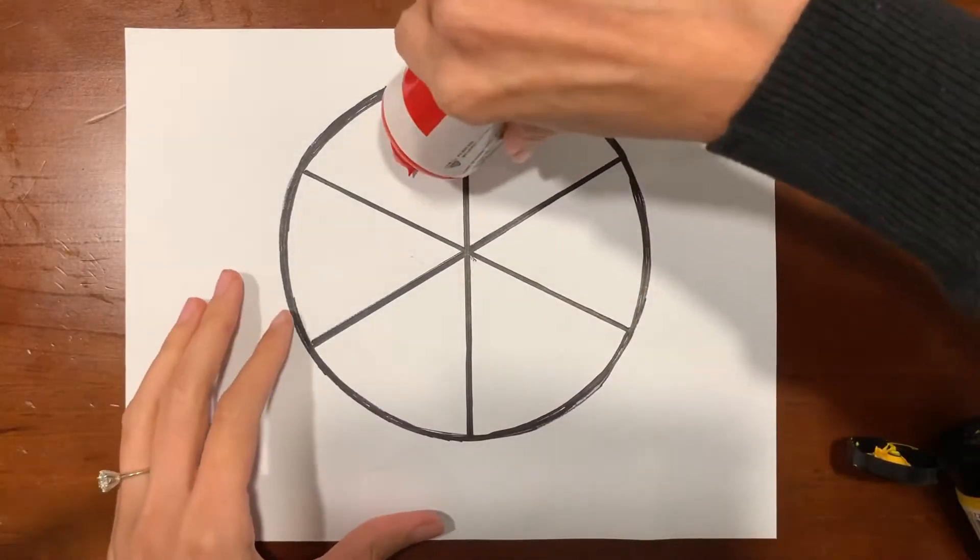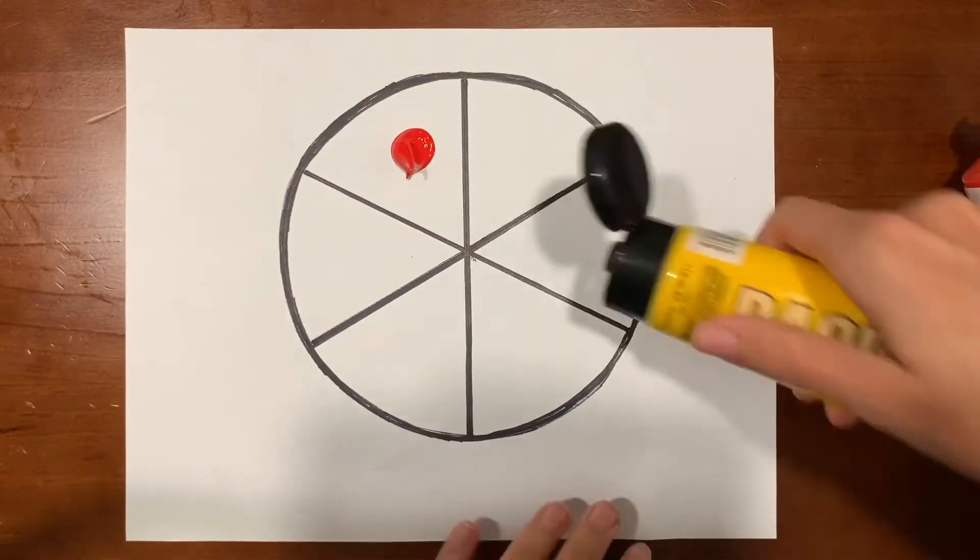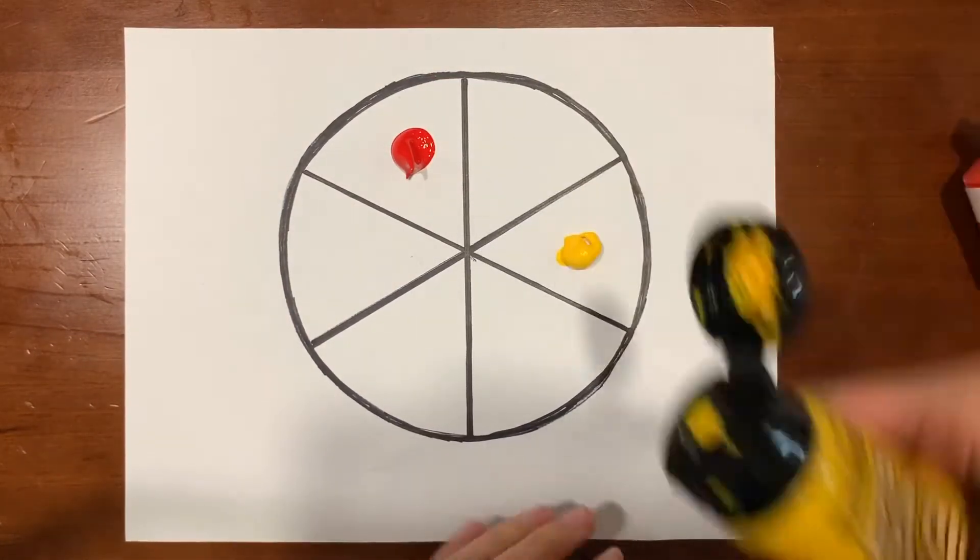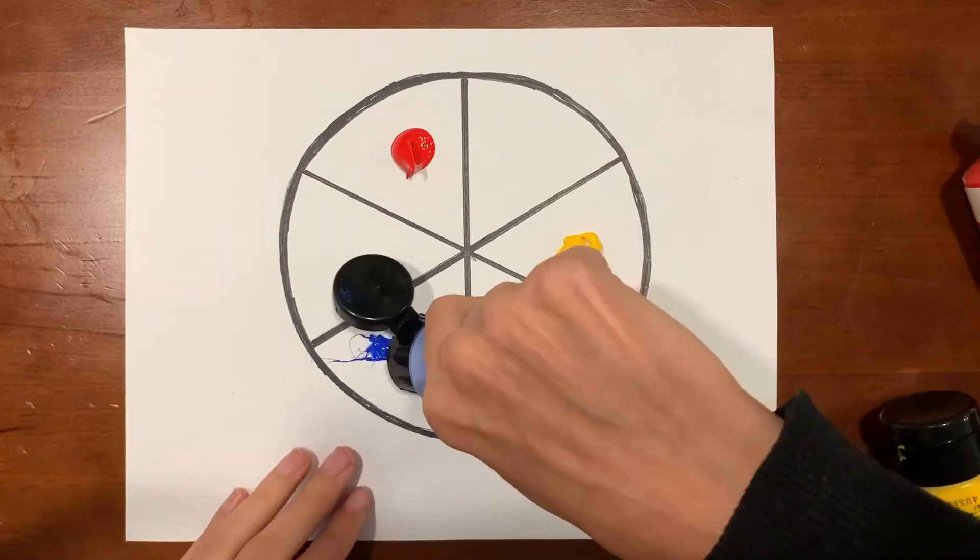To learn about the element of color, we first have to start with the three primary colors: red, yellow, and blue.